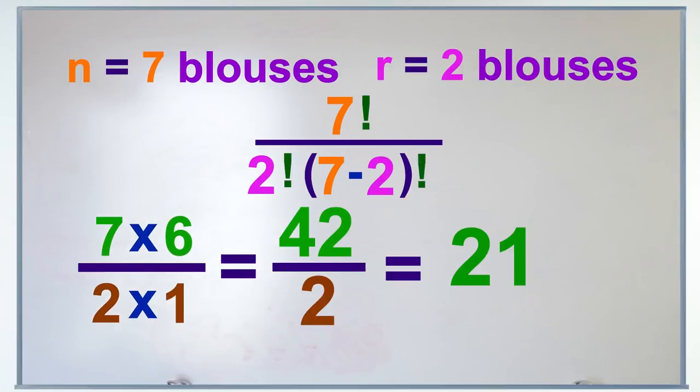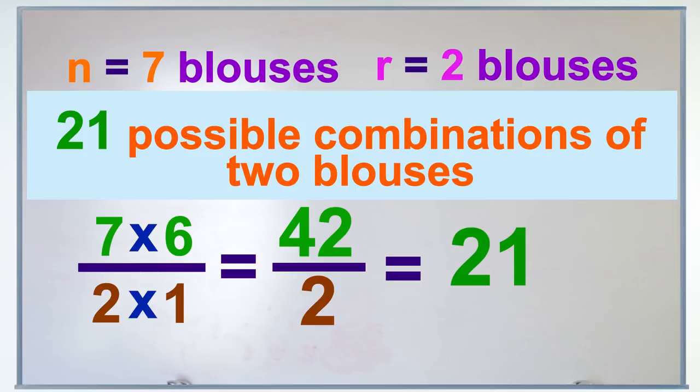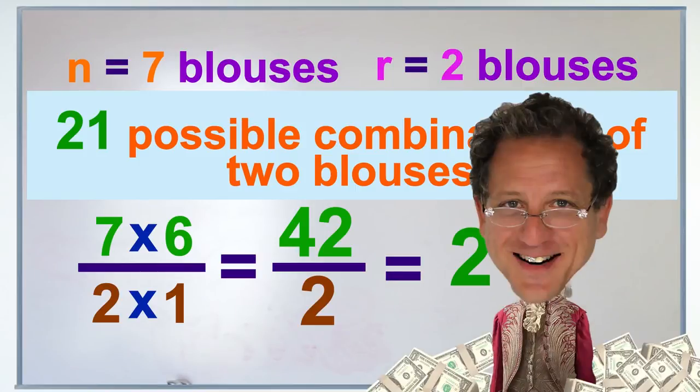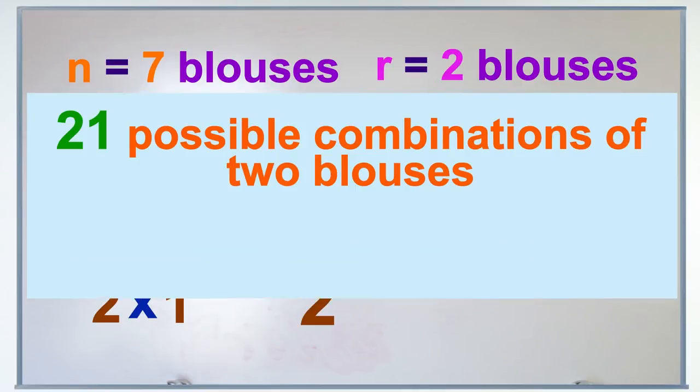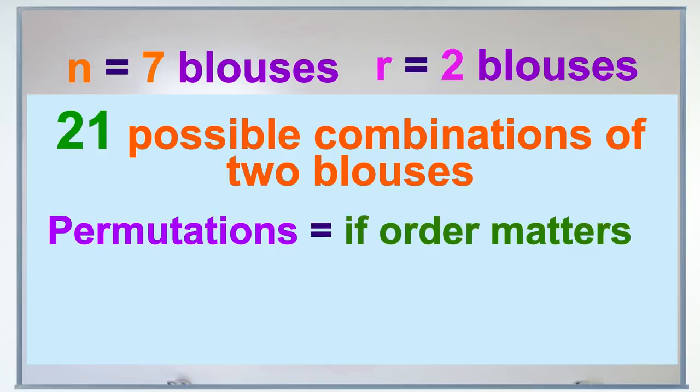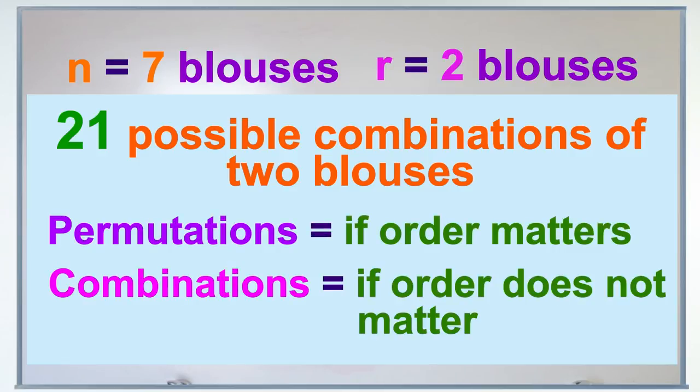So, 21 combinations of two dresses you could try hocking on the street, or we suggest eBay. Just remember, permutations when order matters, combinations when it doesn't. Got that?